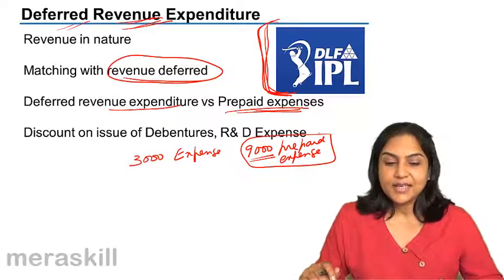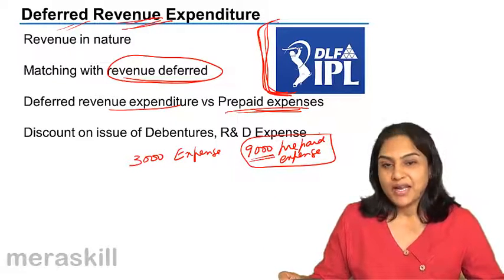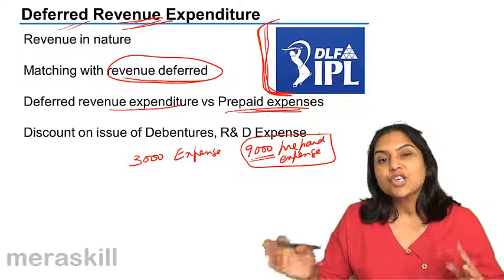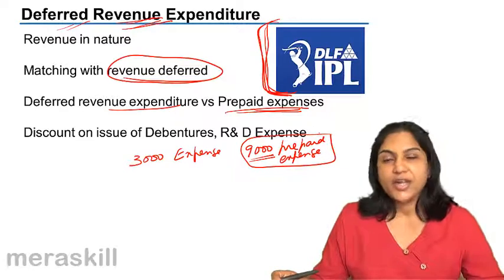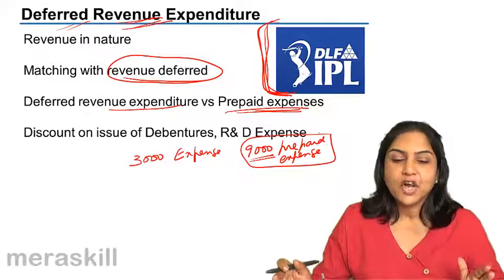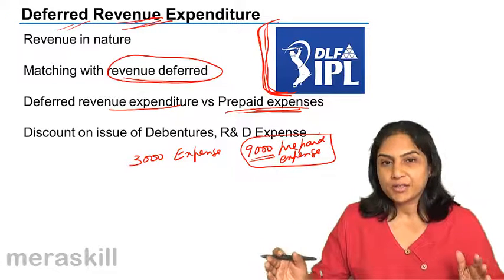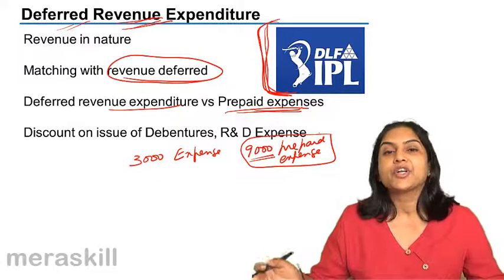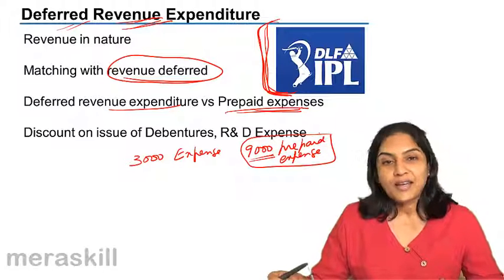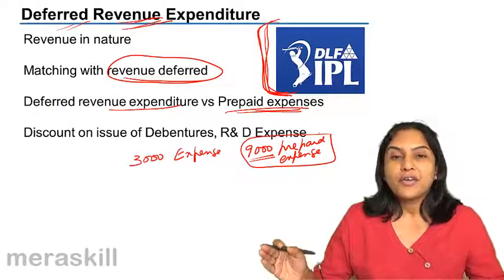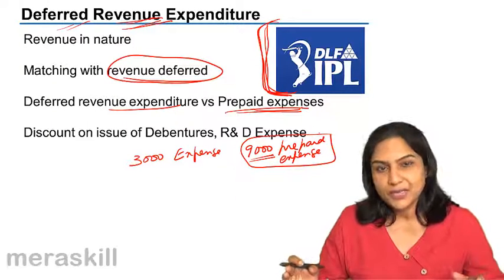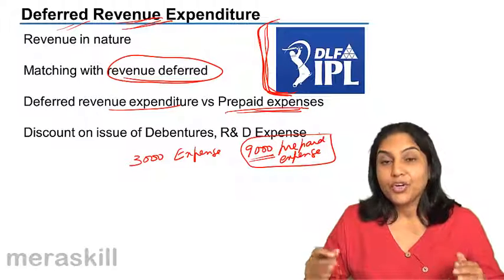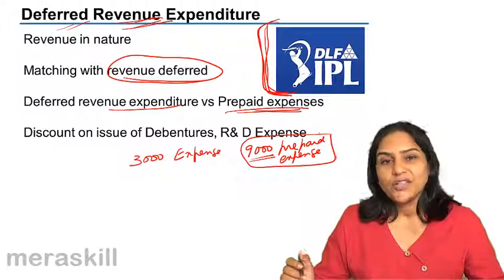Accounting Standard 26 on intangible assets actually says that such expenses should be written off to the profit and loss account and not capitalized. However, we did have a concept of deferred revenue expenditure — basically an expenditure which is revenue in nature but of a huge amount, the benefit of which was supposed to accrue in the future too, and therefore was written off over a reasonably certain number of years, because we could not ascertain exactly for how long the benefit would be received.